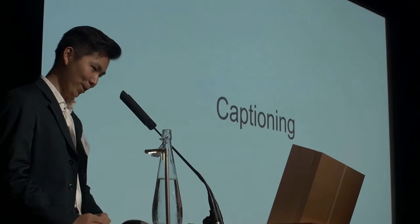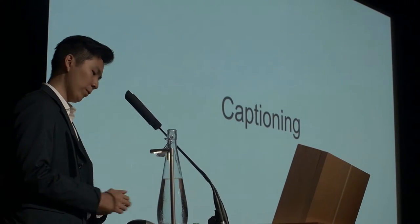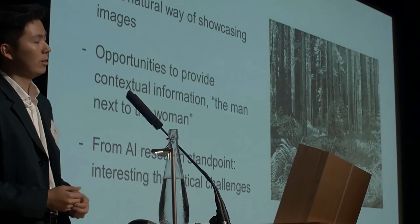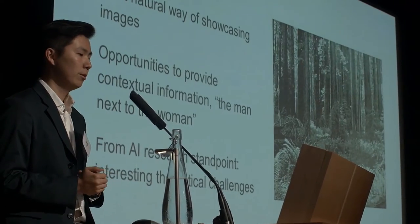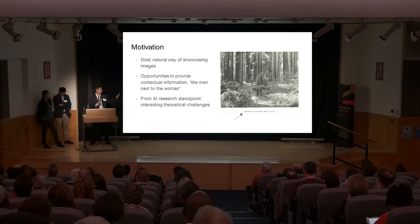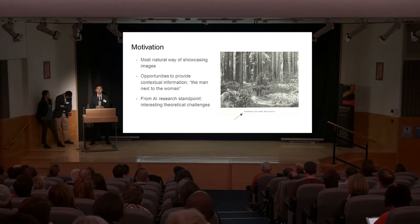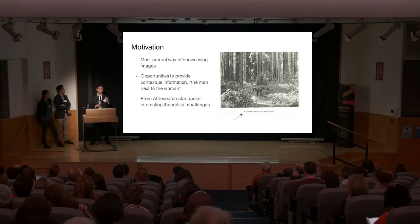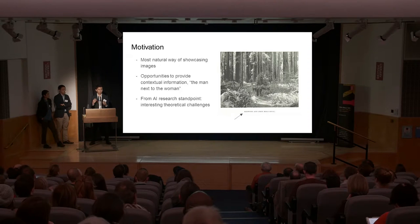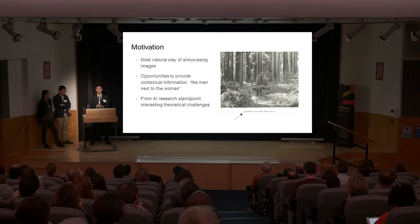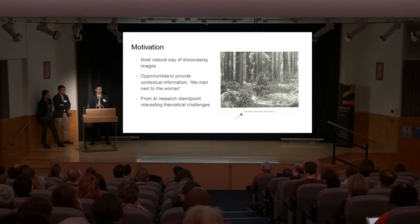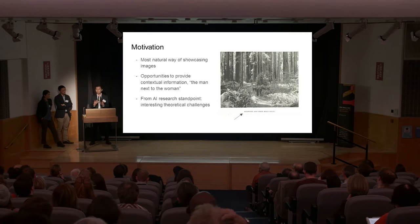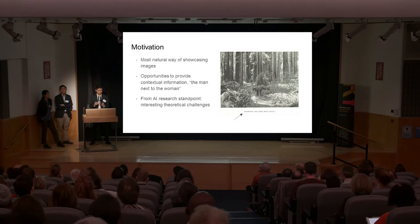So, evolution: we have tagging, now we have captioning. Before the technical details, I want to talk about why we want to do this. Captions have been around for images for a long time and they provide opportunities to get more contextual information about where objects in an image are related to each other. From an AI research perspective, it is a really interesting task for a computer to understand something about the image and be able to form coherent sentences about it.